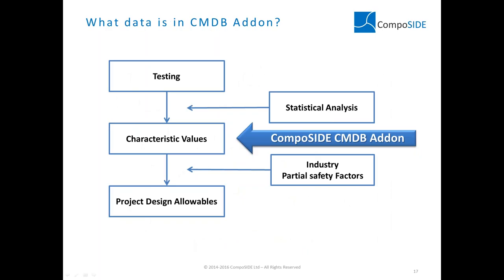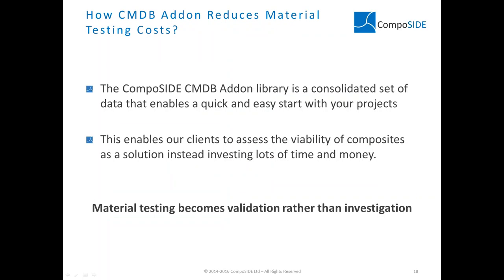What data is in the CMDB add-on? The CMDB add-on is a set of characteristic values derived from testing using statistical analysis — in other words, minimum values which a material will have to deliver. You can then apply your own specific industry partial safety factors to derive your project design allowables. This makes it ideal and relevant for anyone using structural composites. The CMDB add-on can reduce material testing costs by providing a library of consolidated data sets that enable you to quickly and easily start projects. This enables clients to assess the viability of composite applications rather than investing lots of time and money upfront — so material testing becomes a validation rather than an initial investigation.